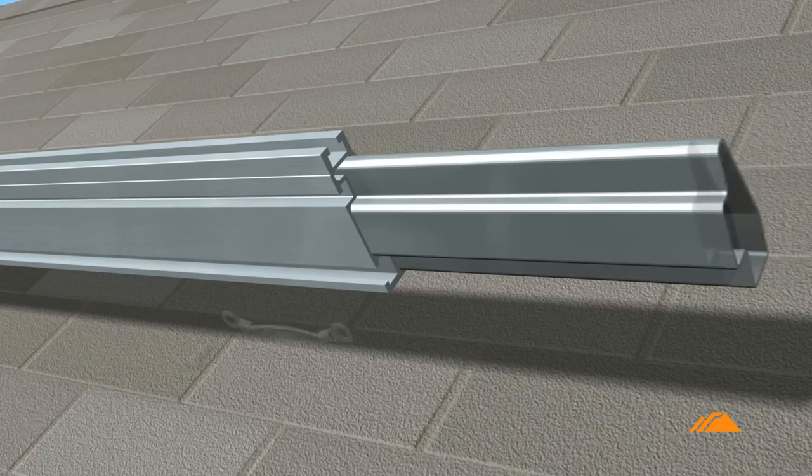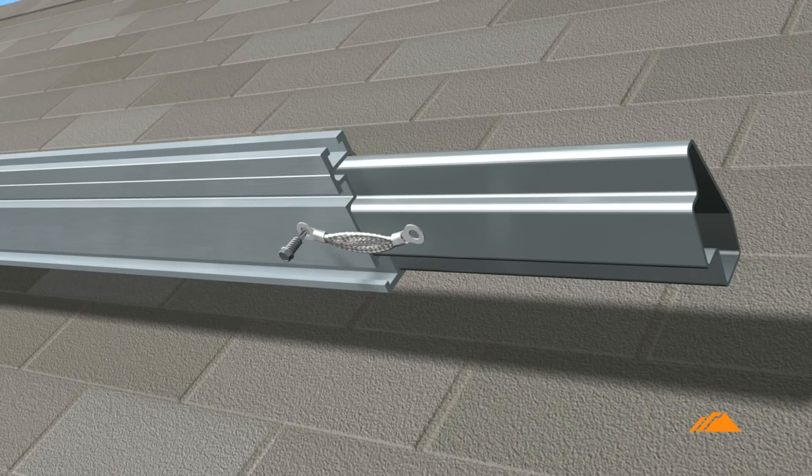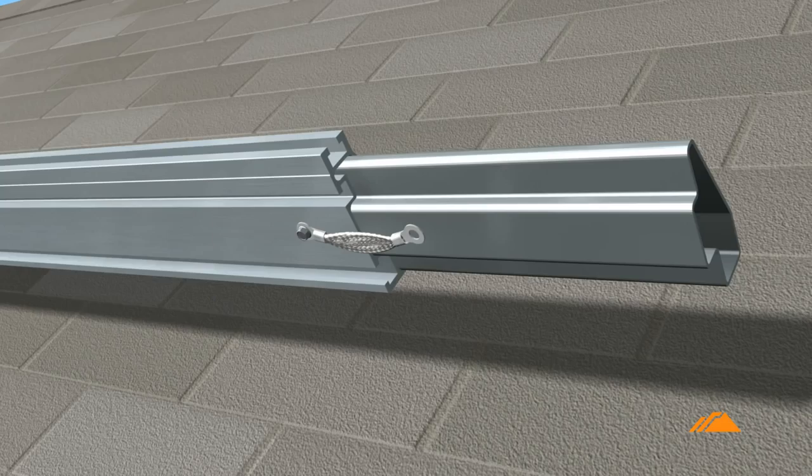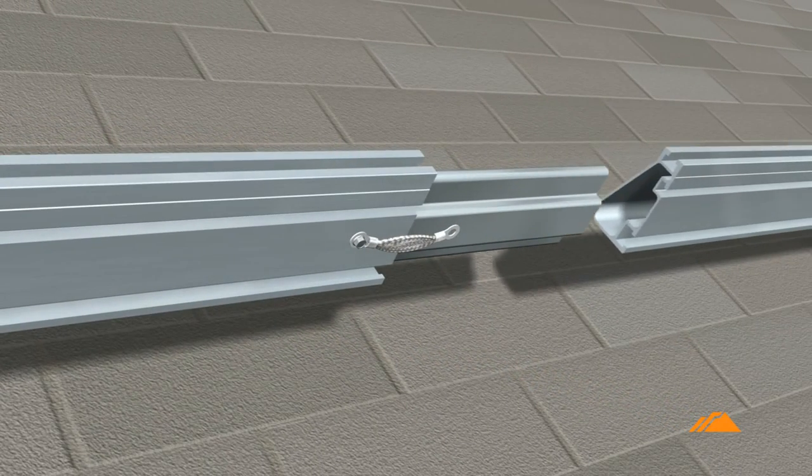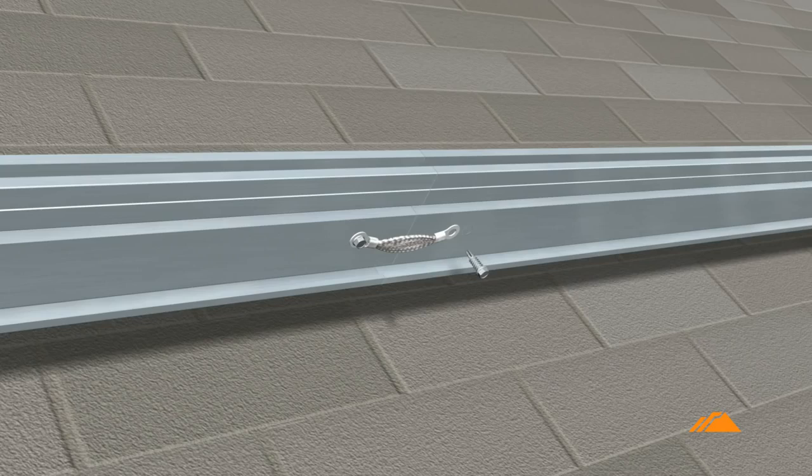Connect rail segments by inserting the Iron Ridge Rail splice into the first rail and securing the grounding strap assembly. Then sliding the second rail over the splice and completing the grounding strap assembly.